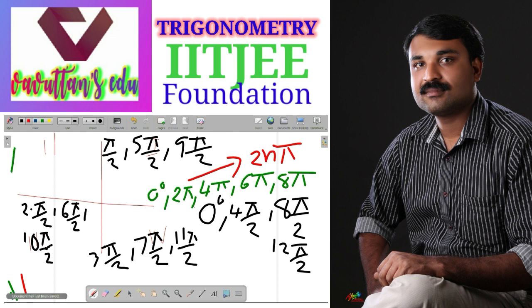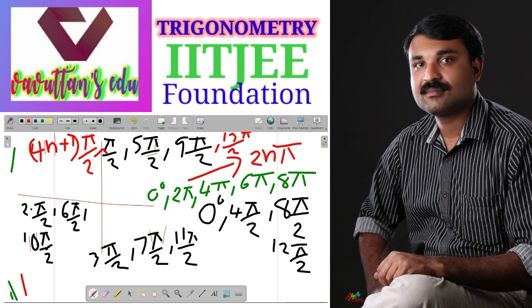The positive y-axis corresponds to angles pi by 2, 5 pi by 2, 9 pi by 2, 13 pi by 2, and so on. In general, this is represented by (4n + 1) times pi by 2. When n equals 0, this gives pi by 2; when n equals 1, it gives 5 pi by 2; when n equals 2, it gives 9 pi by 2; when n equals 3, it gives 13 pi by 2.